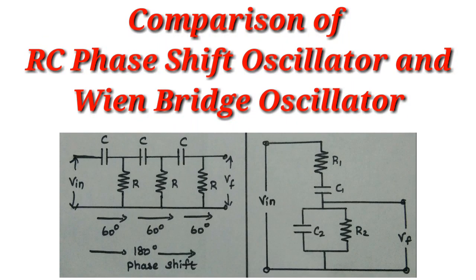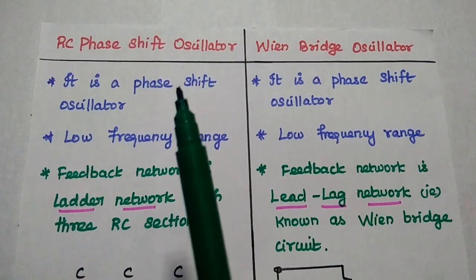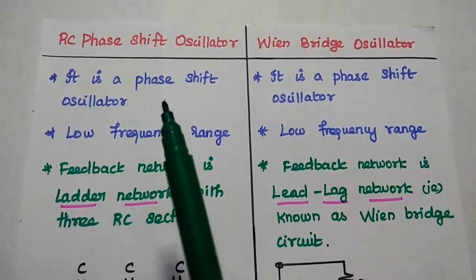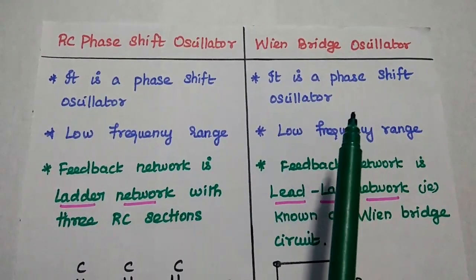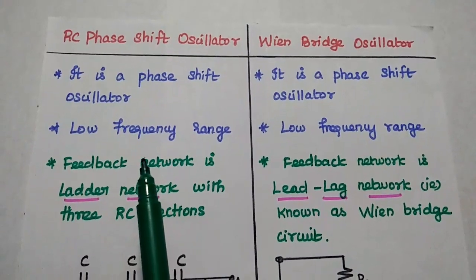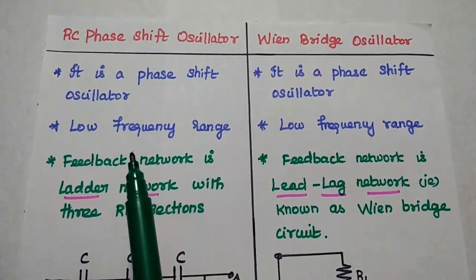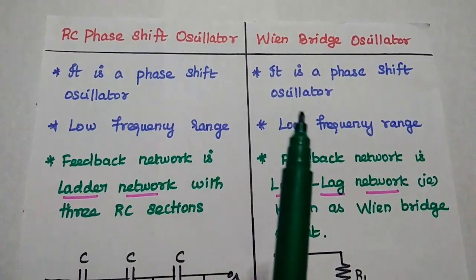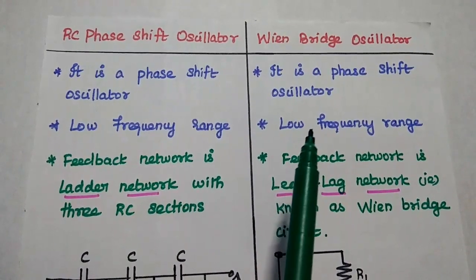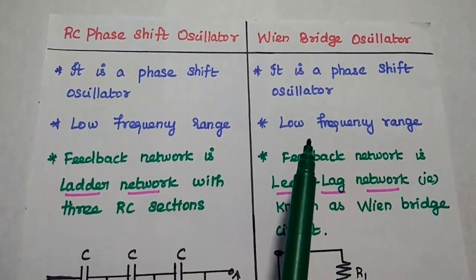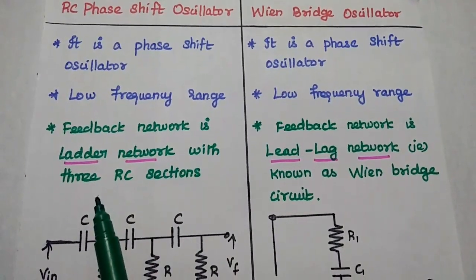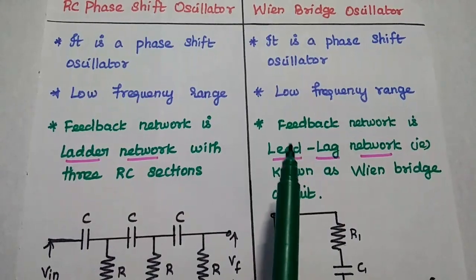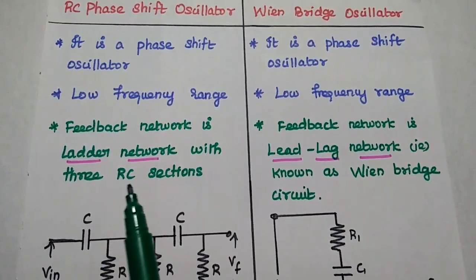We are going to discuss the comparison of RC phase shift oscillator and Wien bridge oscillator in detail. RC phase shift oscillator is a phase shift oscillator, and Wien bridge is also a phase shift oscillator. Both produce oscillations in the range of low frequency. The major difference between the RC phase shift oscillator and Wien bridge oscillator occurs in the feedback network.